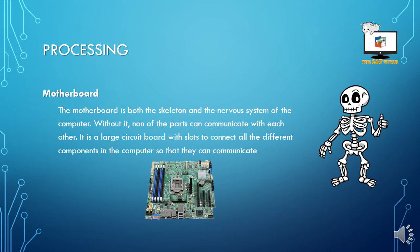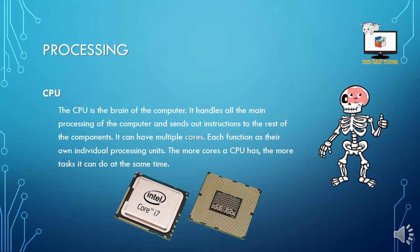Getting to processing. The motherboard is both the skeleton and nervous system of any computer — without it, none of the parts can communicate with each other. It is a large circuit board with slots to connect all the different components so that they can communicate. The CPU, on the other hand, is the brain of the computer. It handles all the main processing and sends out instructions to the rest of the components. It can have multiple cores, each functioning as their own individual processing unit — the more cores the CPU has, the more tasks that can be done at the same time.